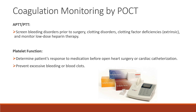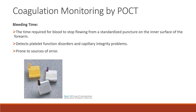The platelet function test determines the patient's response to medication before open-heart surgery or cardiac catheterization, preventing excessive bleeding or blood clots. Bleeding time is the time required for blood to stop flowing from a standardized puncture on the inner surface of the forearm. It detects platelet function disorders and capillary integrity problems. This is now an obsolete test and is prone to sources of error; a POCT device for this is the Surgicutt.